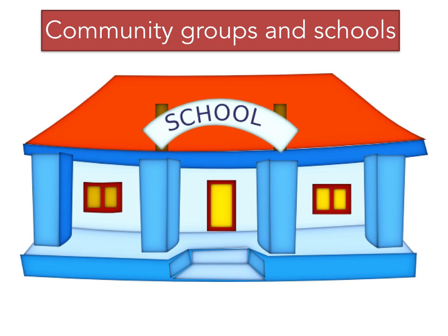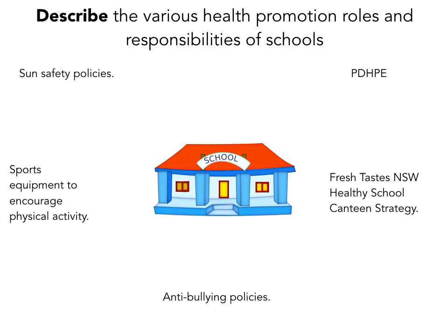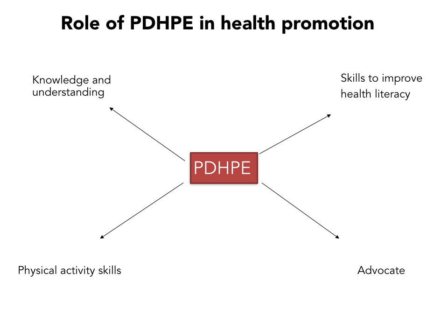Moving on to community groups and schools. Schools have various policies and strategies to promote the health of young people. This is particularly important because young people spend a lot of time at school. Sun safety policies are important, the PDHPE program encourages young people to make safe decisions, canteens provide healthy food, there are anti-bullying policies, and sports equipment encourages physical activity. PDHPE plays a crucial role by developing knowledge and skills to improve health literacy, advocates for health, and provides the opportunity to develop physical activity skills.